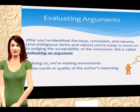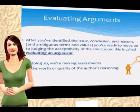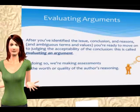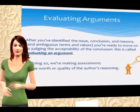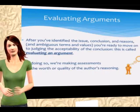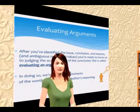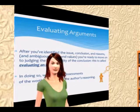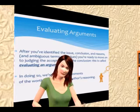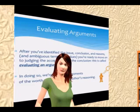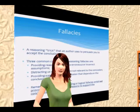After you have identified the basic components of an argument — the issue, the conclusion, the reason, and any ambiguous terms and values — you're really ready to move on to judging the acceptability of the conclusion. This is what I mean by evaluating an argument. In doing so, we're making assessments of the worth, value, or quality of the author's reasoning structure.